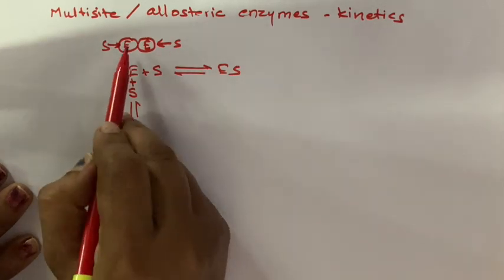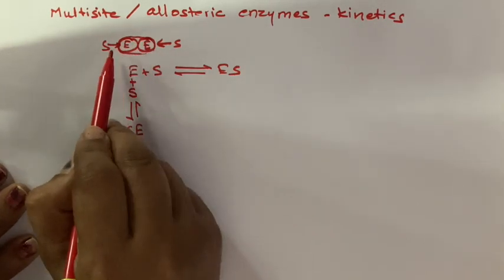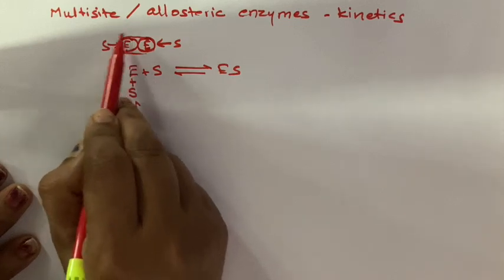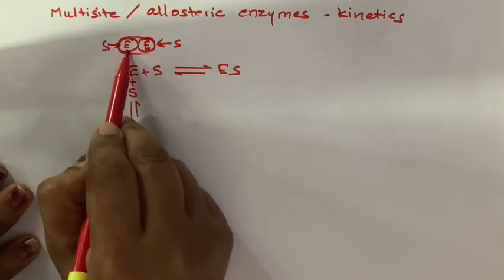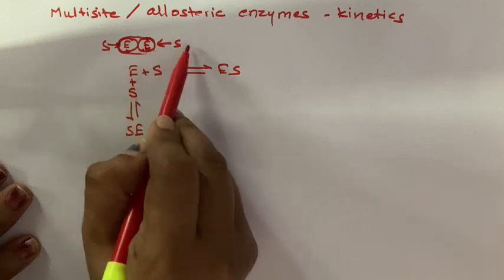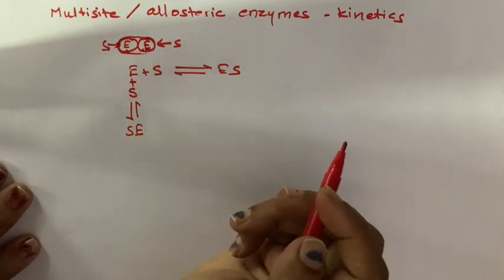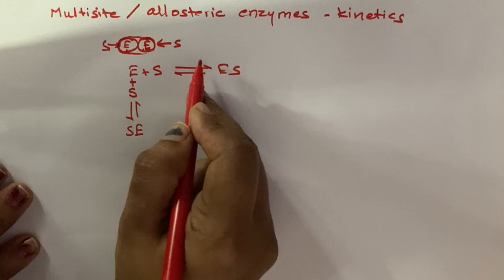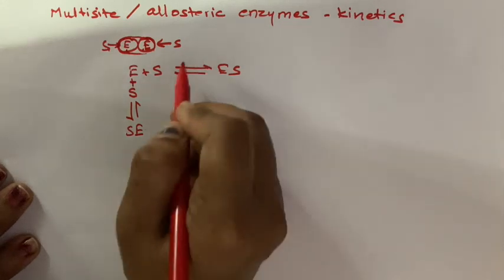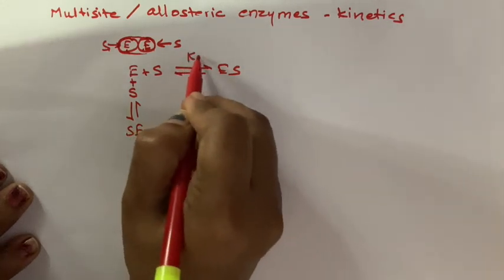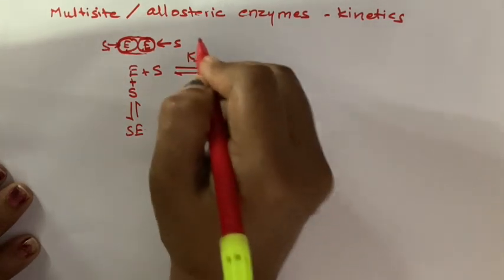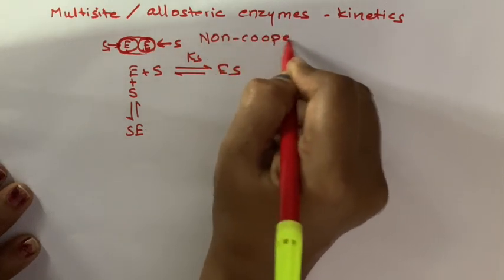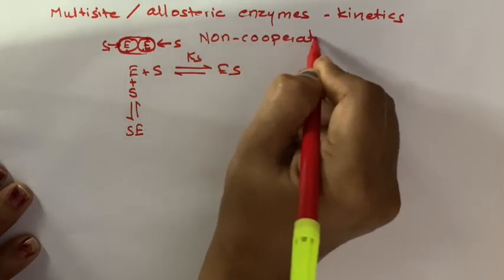We are assuming that this enzyme has got two sites. If the substrate is bound to one site we call it Se, and if bound to the other we call it Es. The dissociation constants are not going to vary — this is called Non-Cooperative Binding.